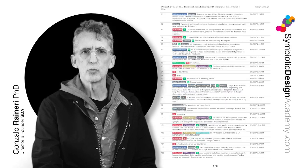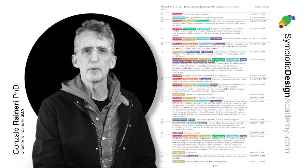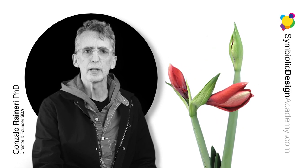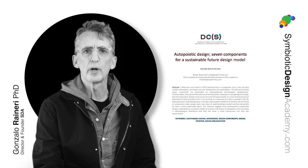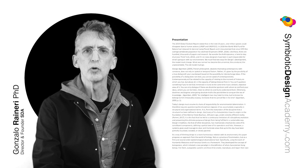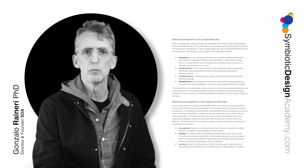During my doctoral research, which ran for five years, design was observed from the theory of autopoiesis — a theory that says living systems have the capacity for self-maintaining and self-regulating themselves through their internal processes and interactions with the environment. During this research, seven constituent components were evidenced and presented at Cumulus Rome 2021 as the basis of an autopoietic design model.